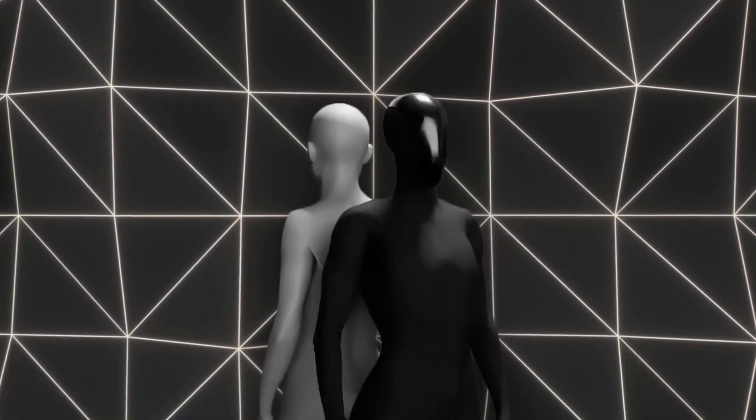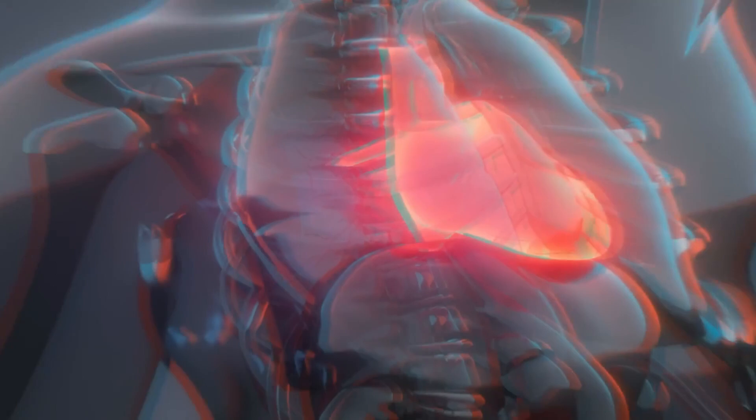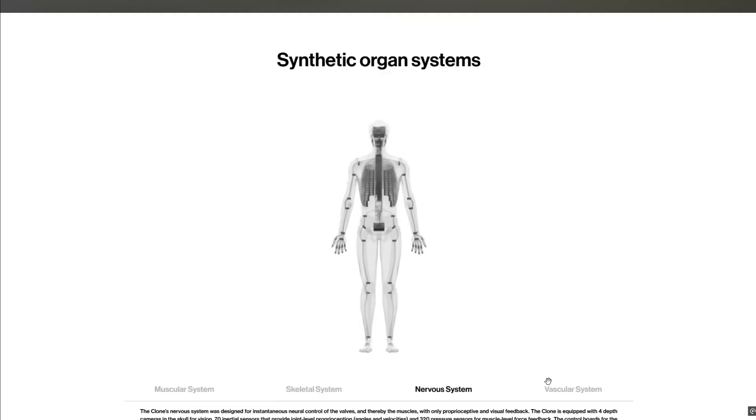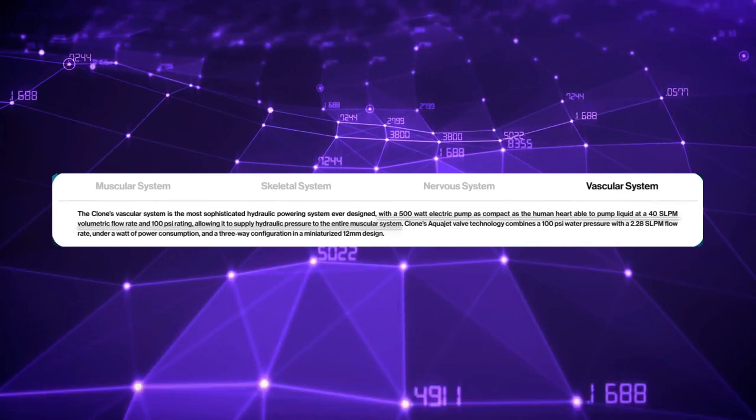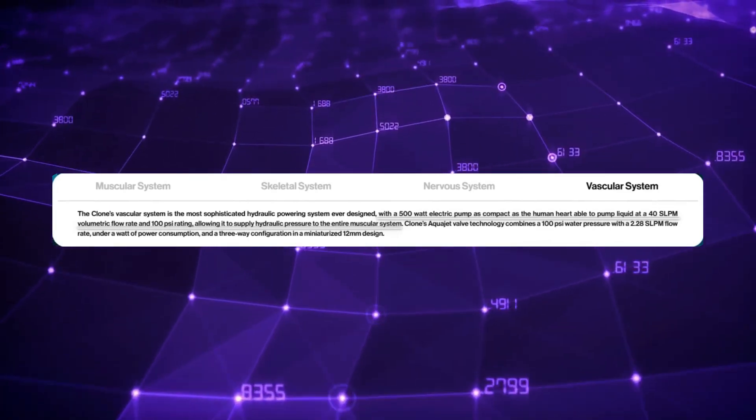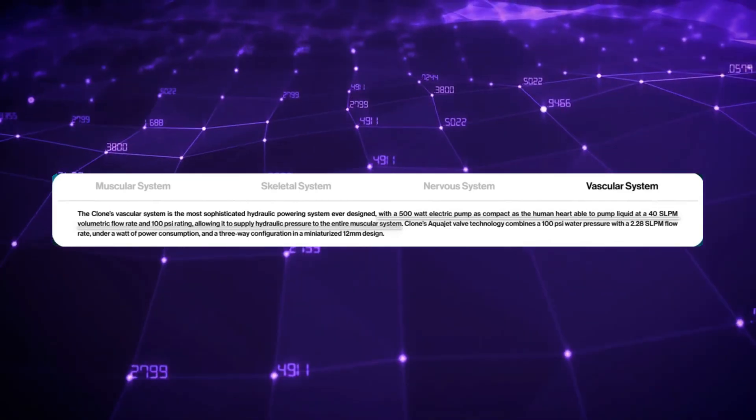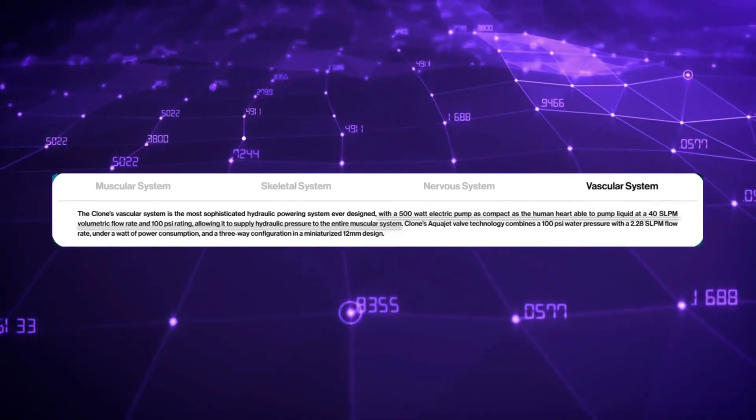Powering all of this is a compact hydraulic pump that functions kind of like a human heart. It circulates fluid through the robot's vascular system, delivering the pressure needed for those muscle contractions. This pump is impressively efficient - it operates at 500 watts while circulating 40 liters of hydraulic fluid per minute at 100 psi.